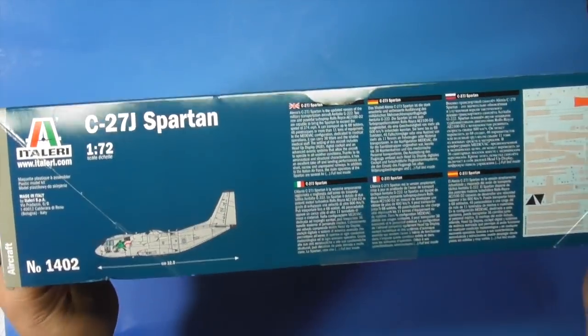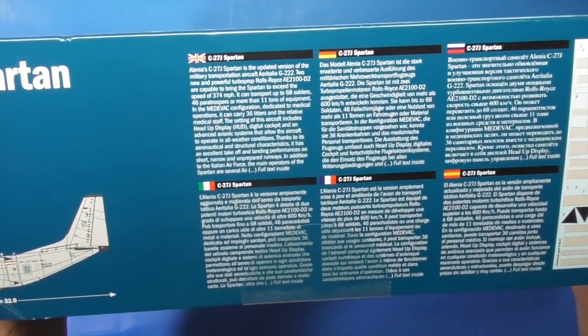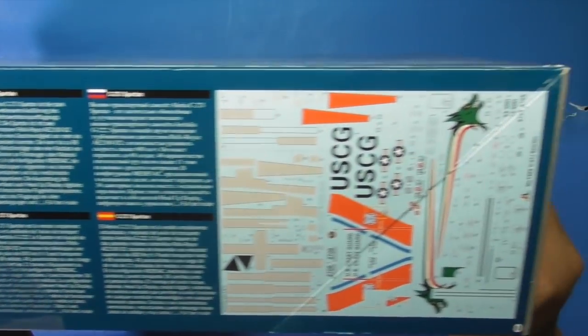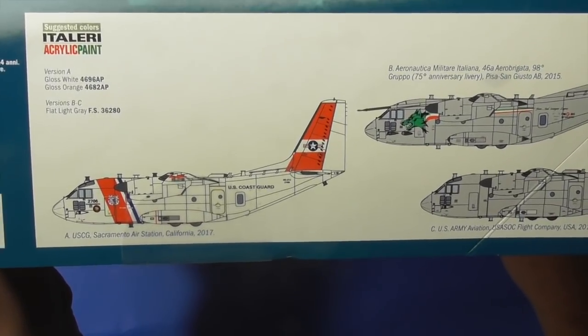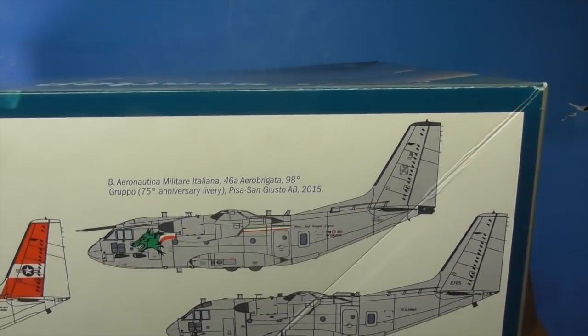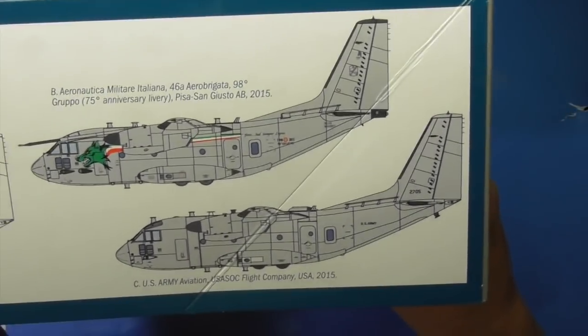You've got a little about the aircraft in multiple languages, cartograph decal schemes. Over here you've got your three versions: the Coast Guard, which I like and I'll probably do, the Italian 75th Anniversary, and the U.S. Army.